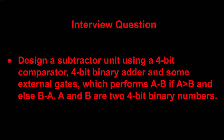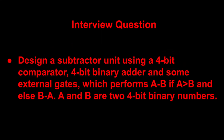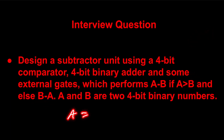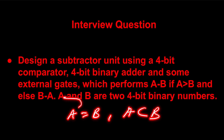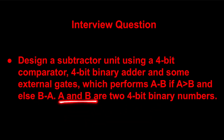Today we are going to discuss a problem in which a subtractor needs to be designed. A four-bit comparator and four-bit binary adder are given, and we can use some external gates. We need to perform A minus B if A is greater than B, and else B minus A — meaning whenever A equals B or A is less than B, we perform B minus A. A and B are two binary numbers.